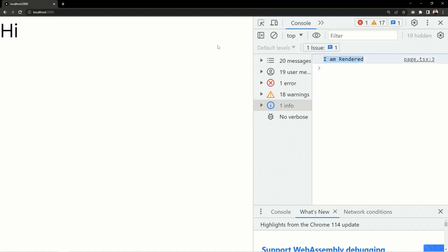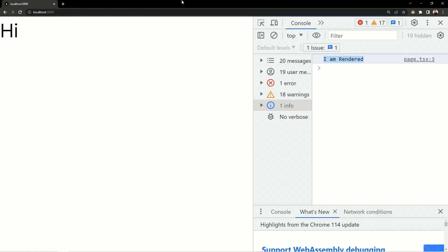That was a basic example showing the difference between server and client components. Let's see some more differences. The first area is the rendering environment: server components are rendered on the server side at the time of compilation and when generating the initial HTML page. Client components work on the client side — you initially get a blank HTML page and then content is dynamically inserted into the DOM.